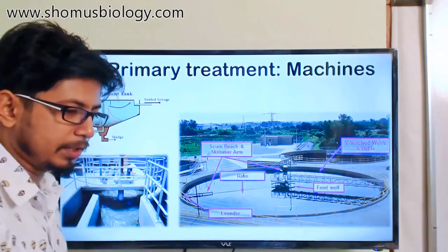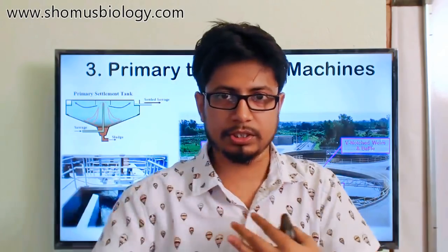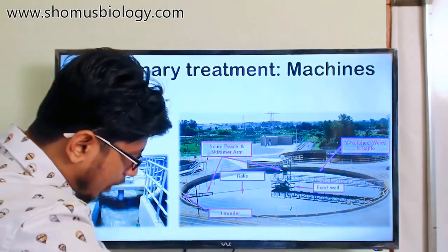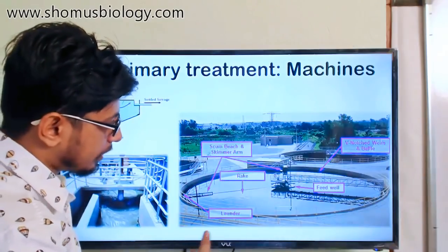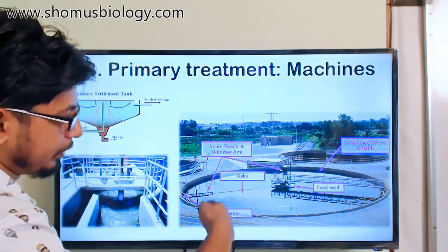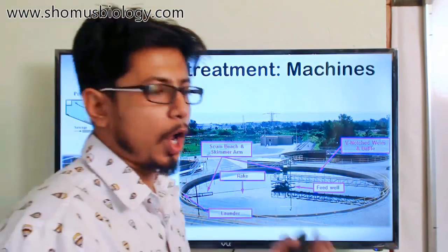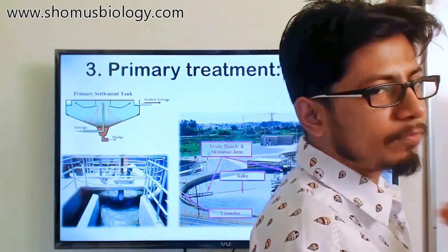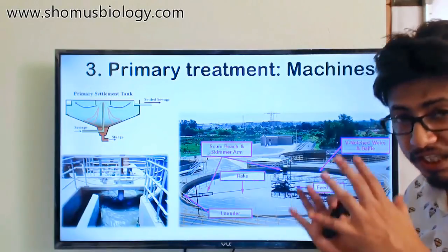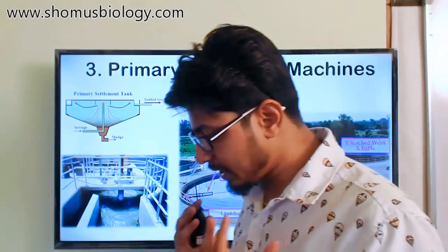The skimmer arm is the mechanical structure that separates all the grease and floating oil materials from the top. There is also another skimmer at the bottom, though it's not visible in this picture. This mechanism continuously rotates, and if you look at it from the top, it looks like a clock — the arm of the clock moves like a skimmer, separating scum on the top layer and sludge at the bottom.